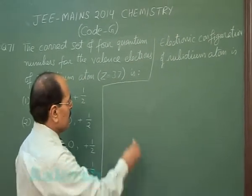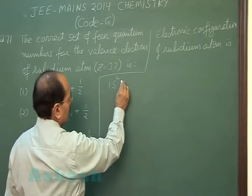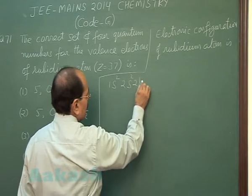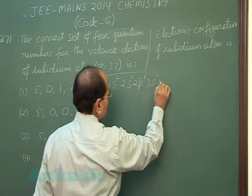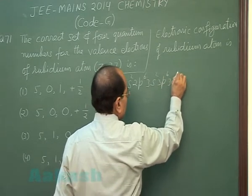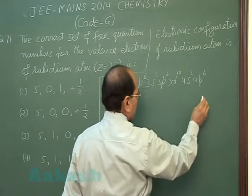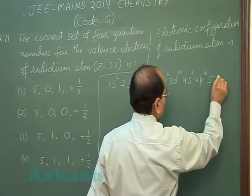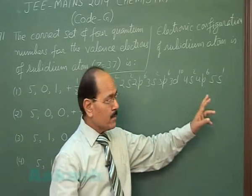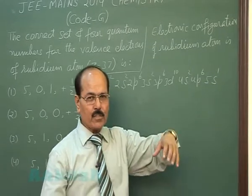The electronic configuration of rubidium is 1s², 2s², 2p⁶, 3s², 3p⁶, 3d¹⁰, 4s², 4p⁶, 5s¹. Rubidium atom has 1 electron in the 5s orbital of the outermost shell.